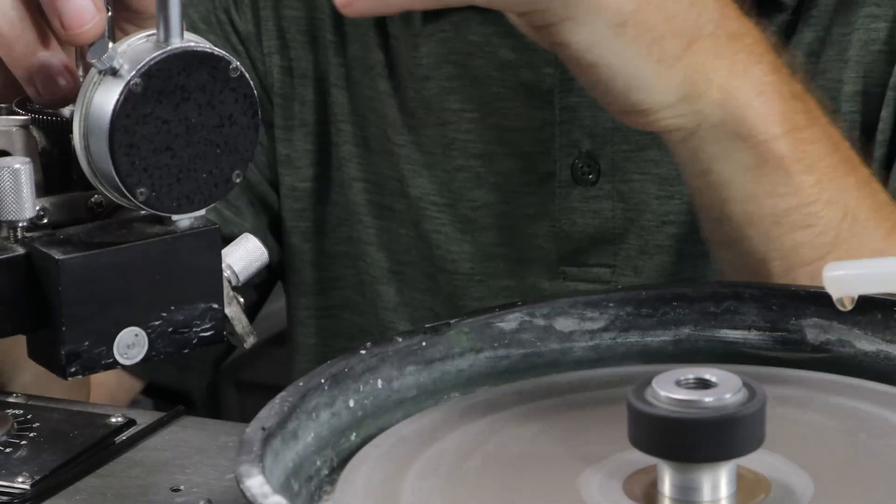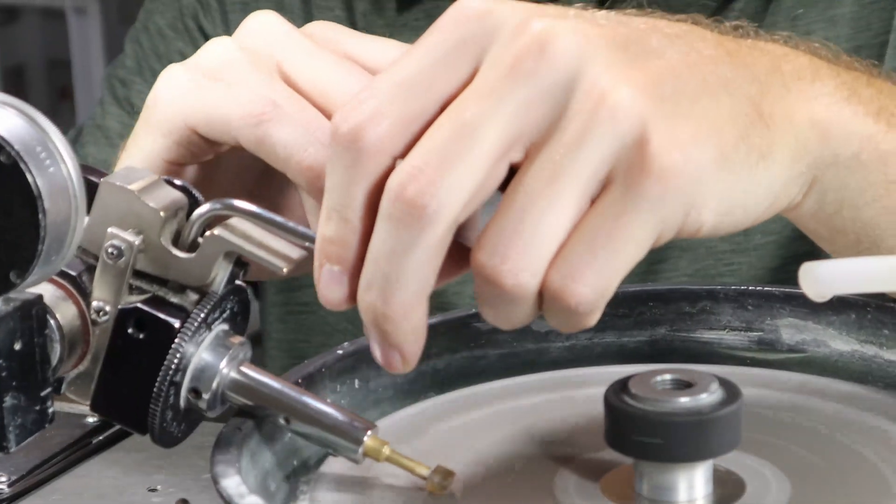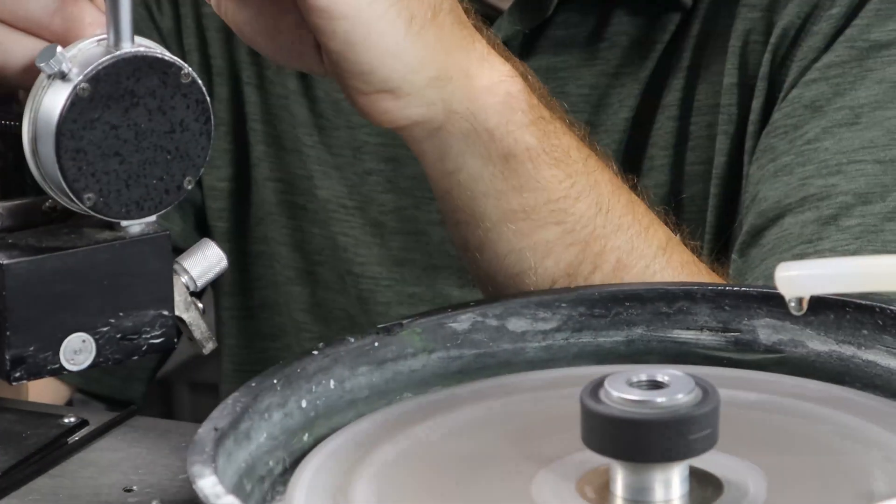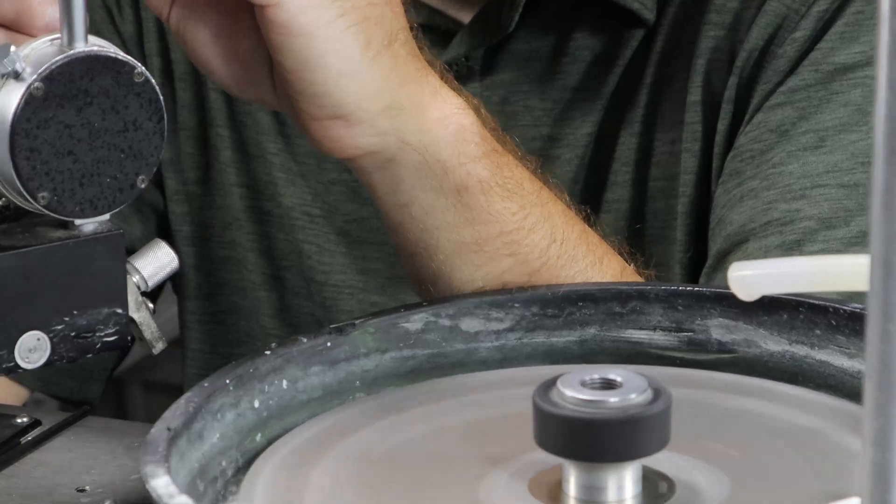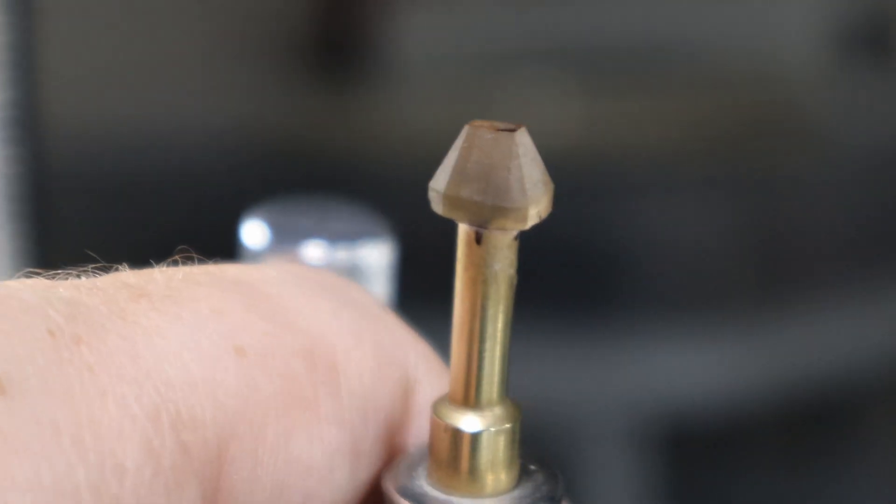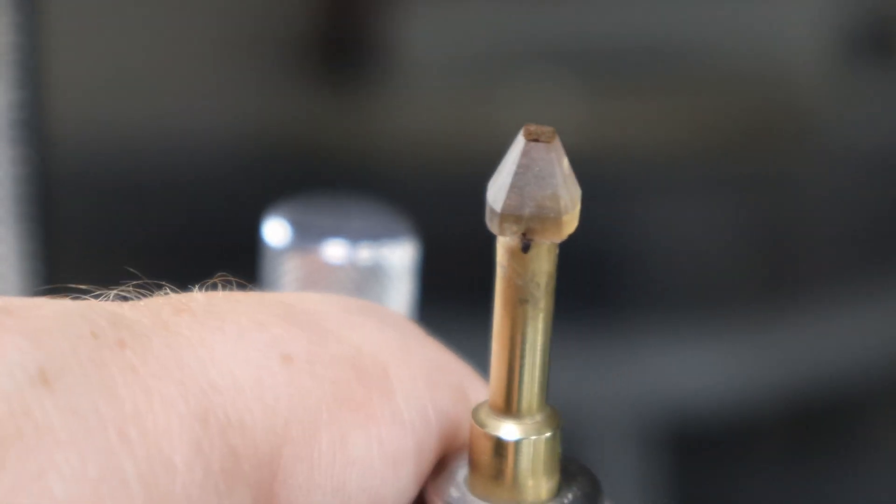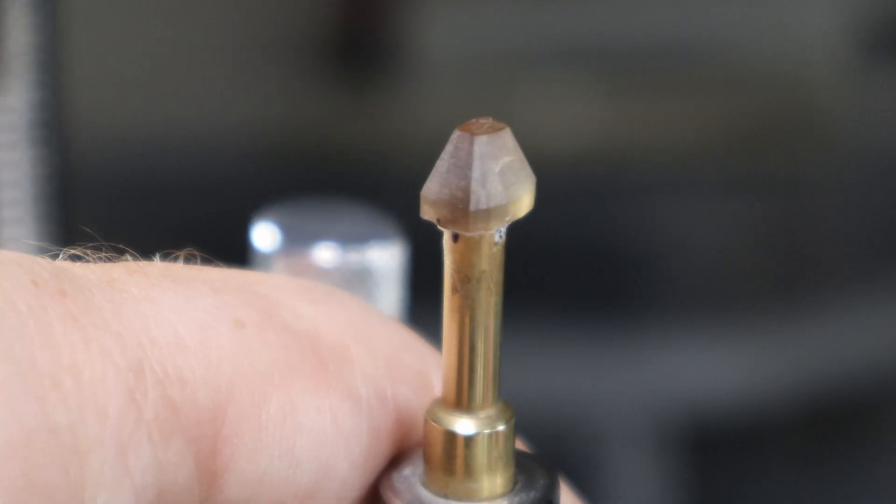After establishing the girdle outline I use a deep angle to cut in facets all along the girdle to form a level girdle line at the position I want, leaving the amount of depth I want for cutting the crown side of the stone compared to the pavilion.